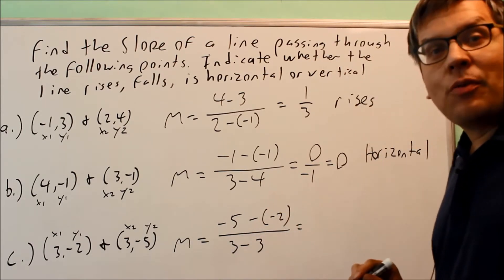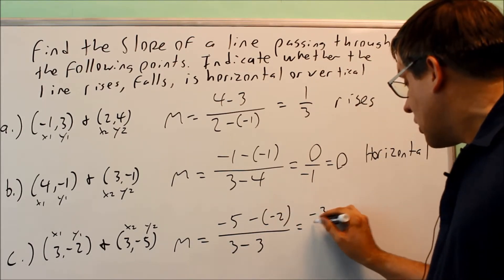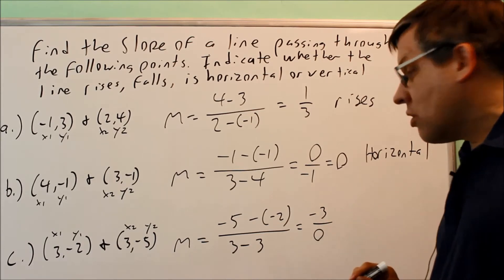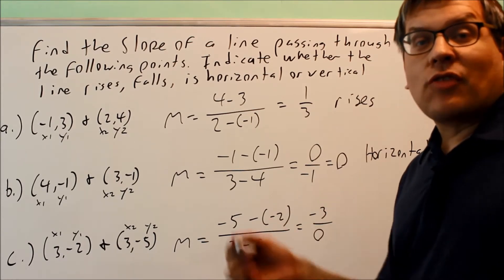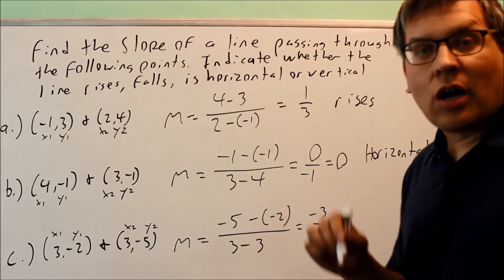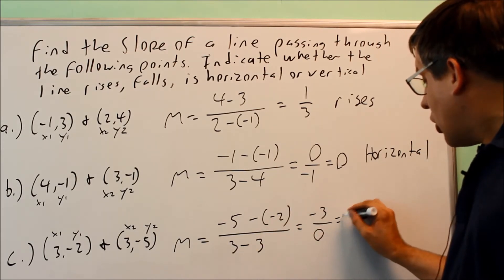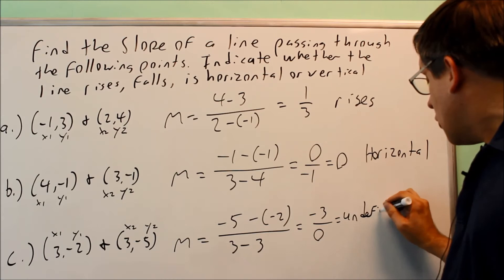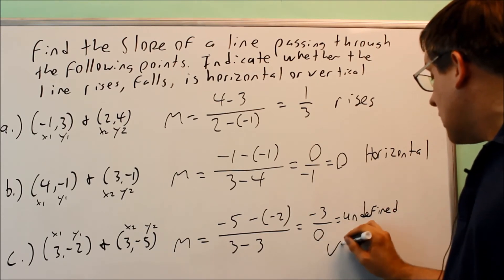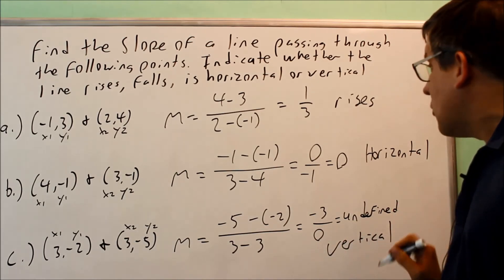On top, I get negative 5 plus 2. That's negative 3. On the bottom, I get 0. So this time, if I'm dividing anything by 0, that's always going to be undefined. So therefore, if I get an undefined slope, that means that this line is going to have to be vertical.